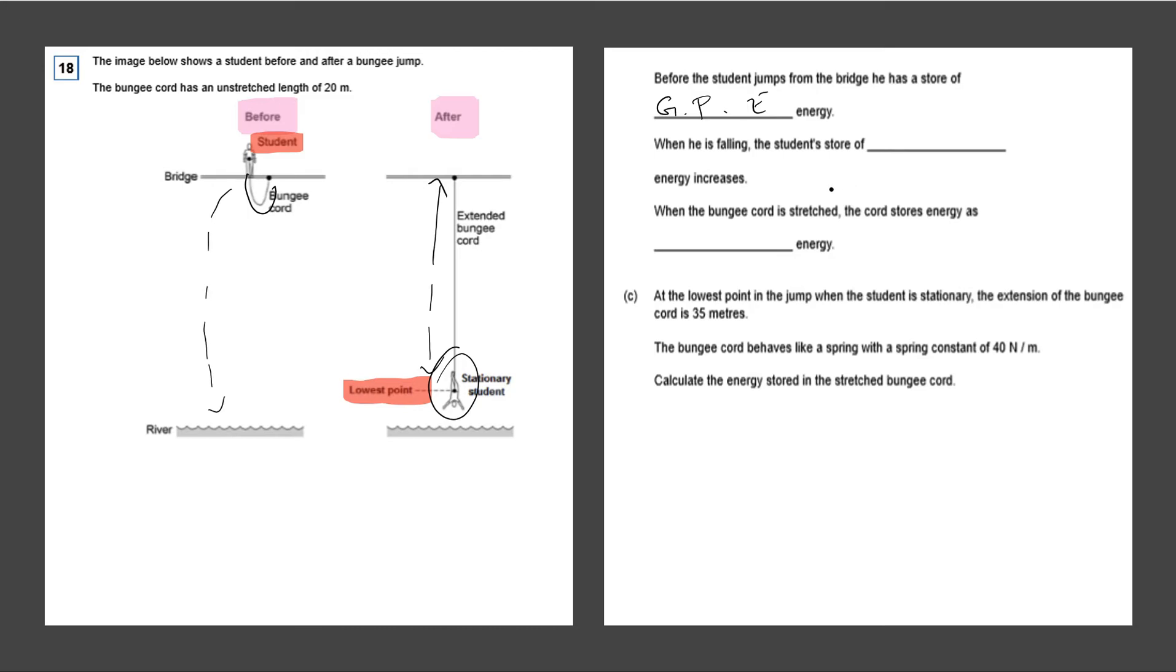And when he is falling, the student's store of something energy increases. So whenever the student is falling, he is going at a quick speed straight down. So this means whenever something is moving, it must have kinetic energy. So we know that this is going to be kinetic energy.